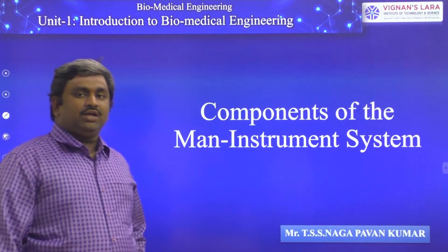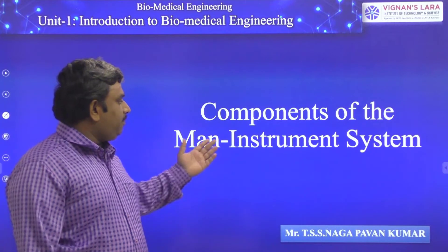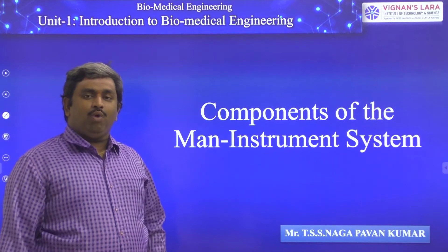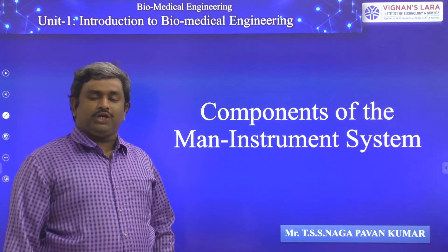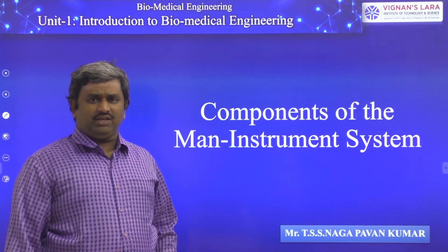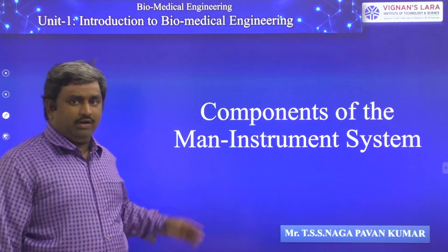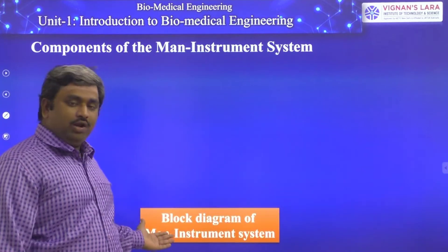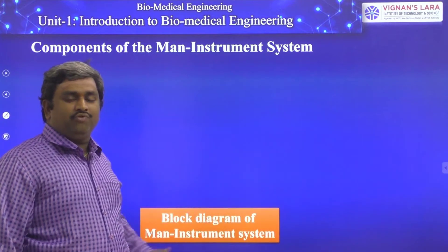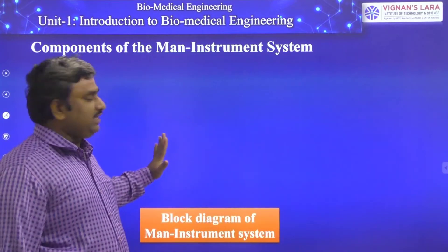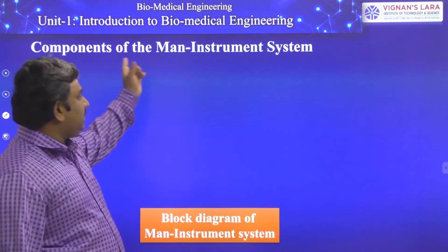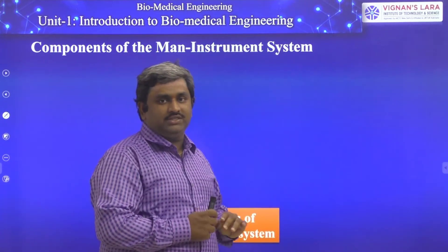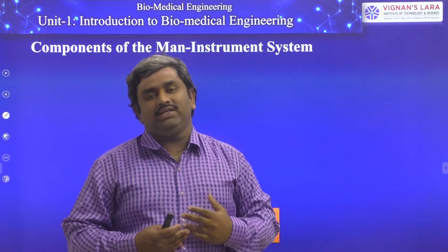Let us continue our topic with components of the main instrument system. Up to now we have seen what is meant by main instrument system, what are the objectives, and what are the different types of measurements we perform. Now we are going to see the block diagram of main instrument system. In this block diagram, a human body and some instrument are available — try to analyze the concept.